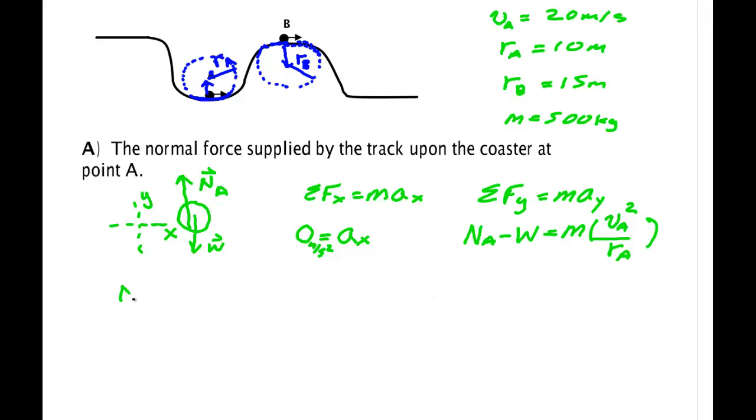So now, the normal force A minus M G is equal to M V A squared over R sub A. So the normal force is equal to M times V A squared over R A plus G.